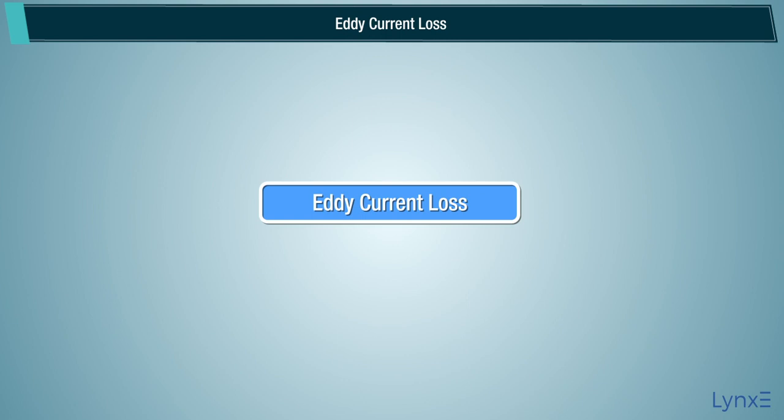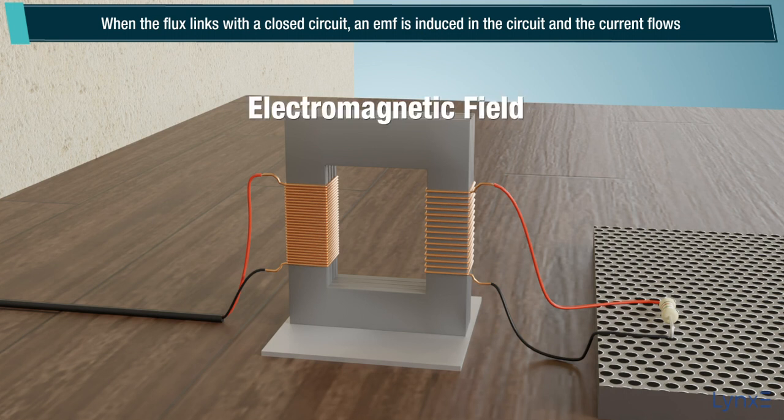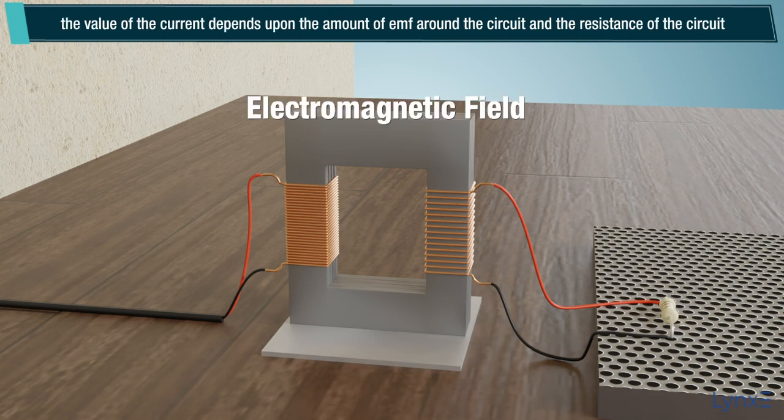Eddy current loss. When the flux links with the closed circuit, an EMF is induced in the circuit and the current flows. The value of the current depends upon the amount of EMF around the circuit and the resistance of the circuit.